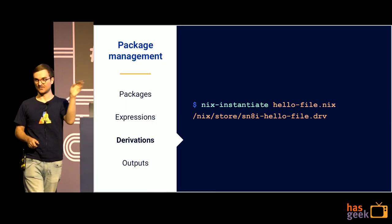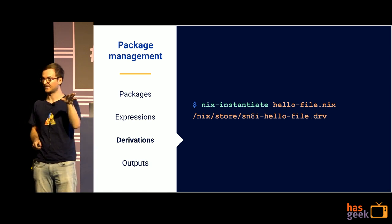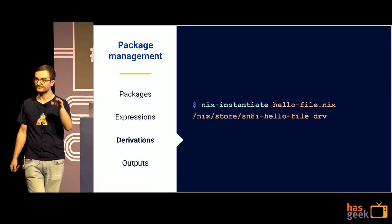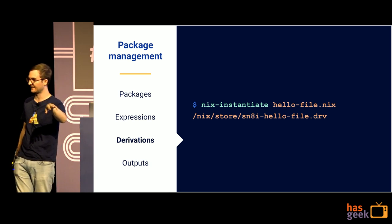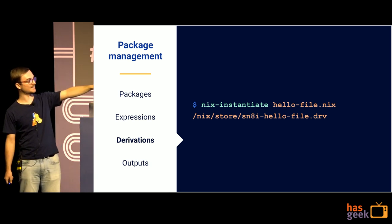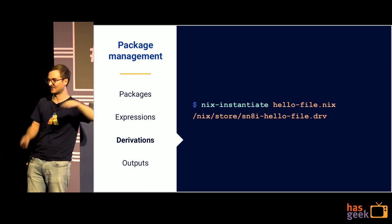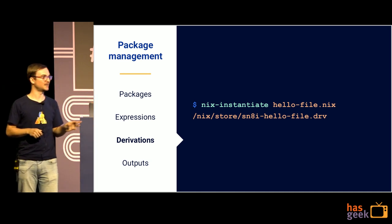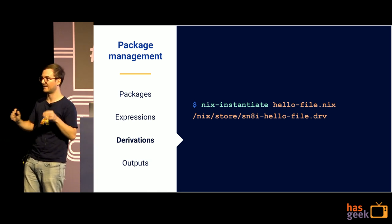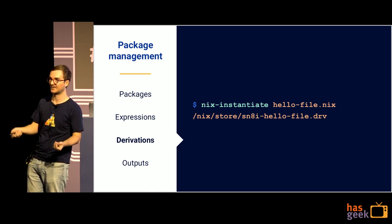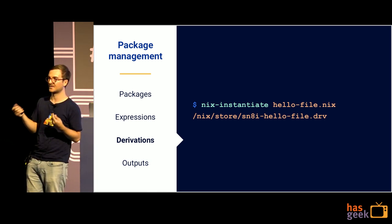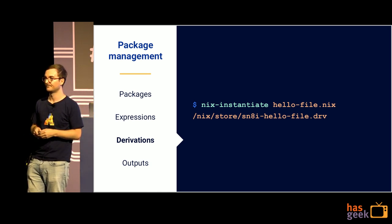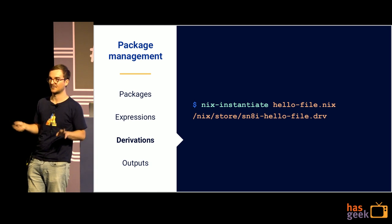This is calling nix-instantiate on the Nix file — the Nix expression. We get a .drv file, and notice the hash — it's actually a 32-character hash. That hash is of the derivation file, so we have content-addressable derivation files. If you were to instantiate this twice, you'd get exactly the same file as output. It's all content-addressed.